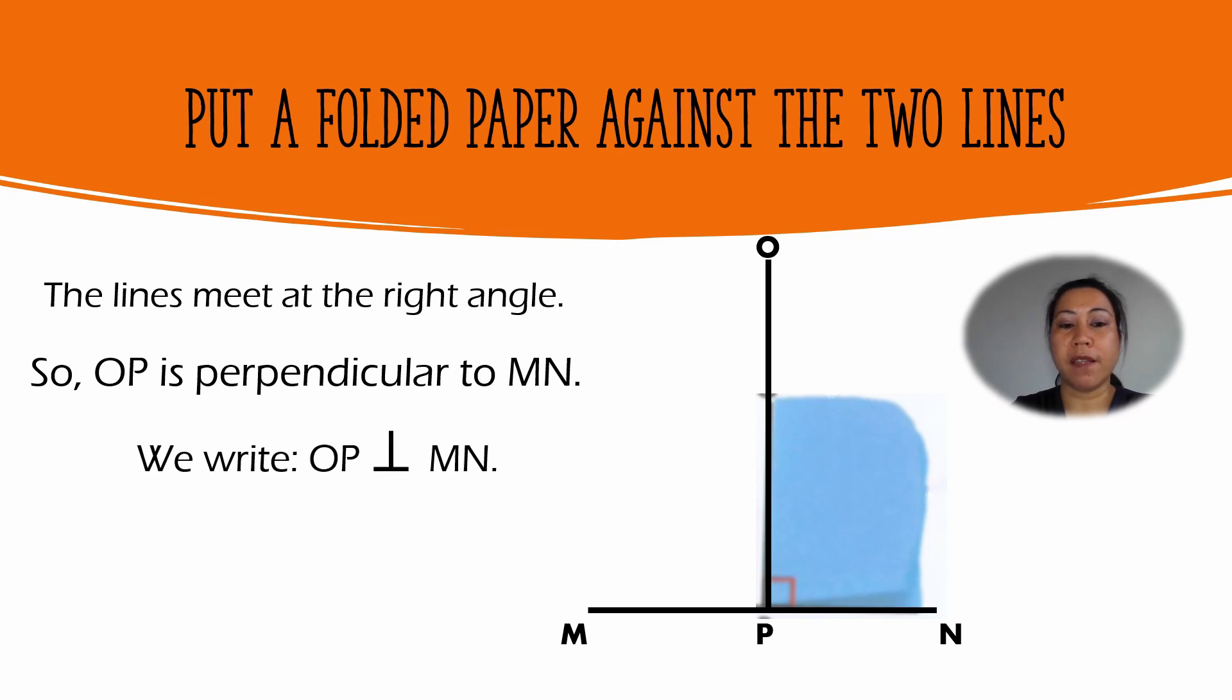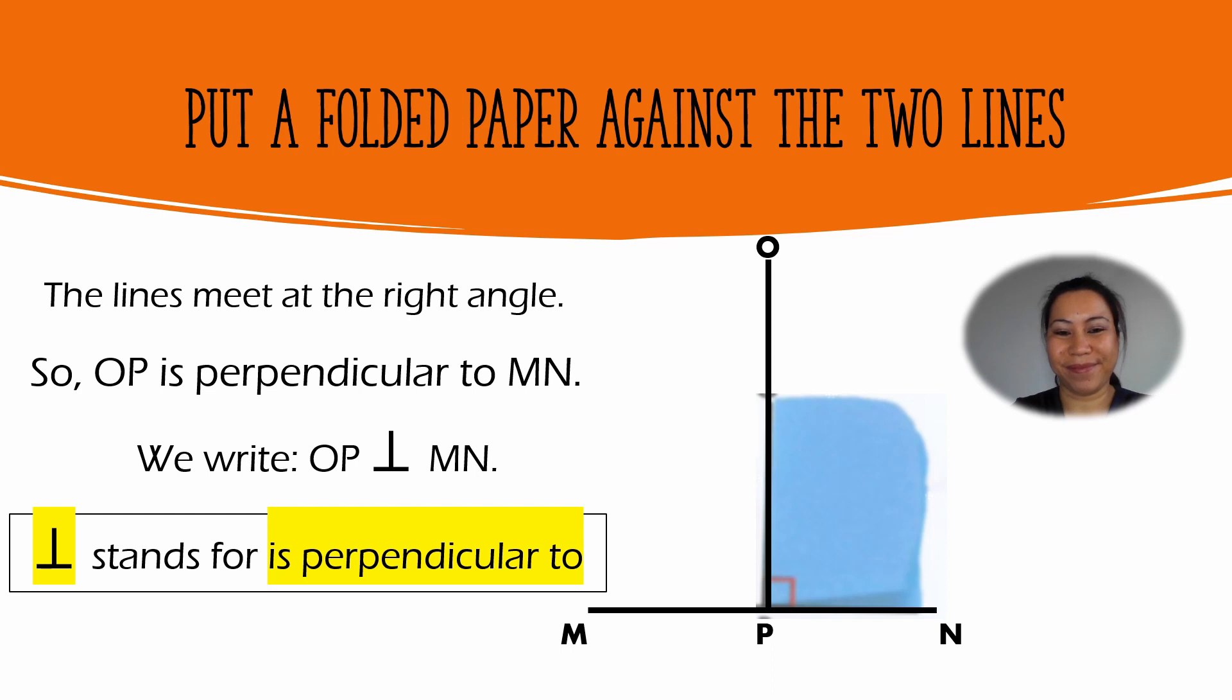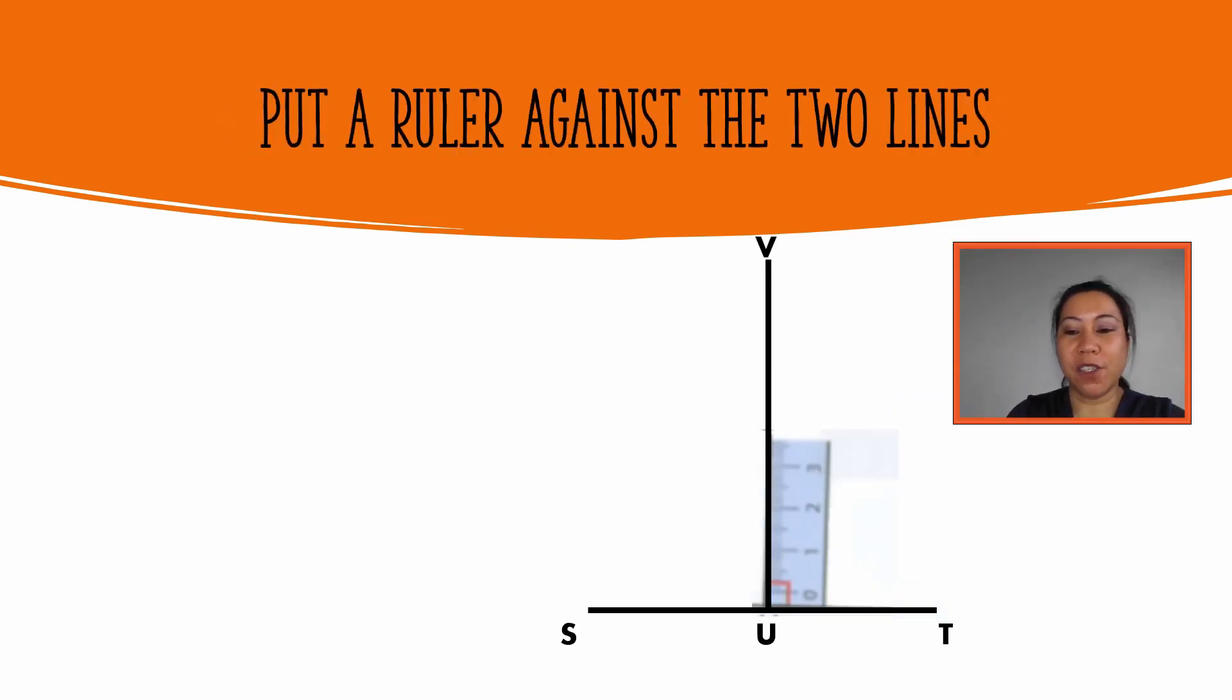We write line OP is perpendicular to line MN. We can also put ruler against two lines. The lines meet at the right angle. So line UV is perpendicular to line ST.